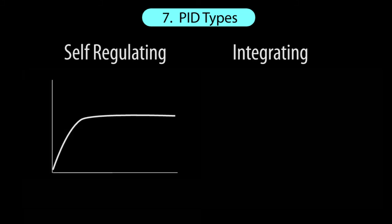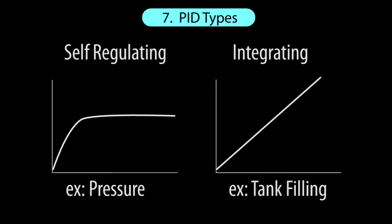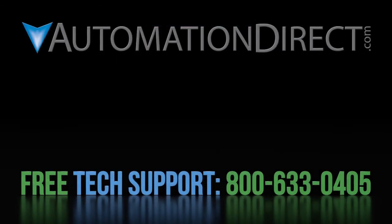The most common PID applications are integrating and self-regulating. In the last video we did a self-regulating example — that's where when you run the motor at a fixed frequency, the feedback signal rises to a value and levels off. In an integrating PID loop, the feedback signal will continue to rise while the motor runs at a fixed frequency. For example, when filling a tank, the motor runs at a fixed frequency but the fluid level continues to rise — it never levels off. Be sure to subscribe to our YouTube channel so you'll be notified when those videos are available. Click here to learn more about the GS4 drive and click here to learn about AutomationDirect's free award-winning support options.